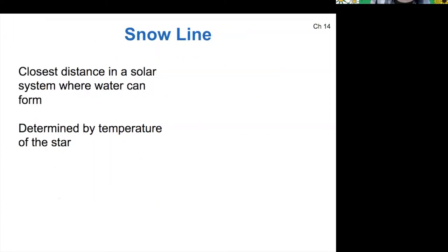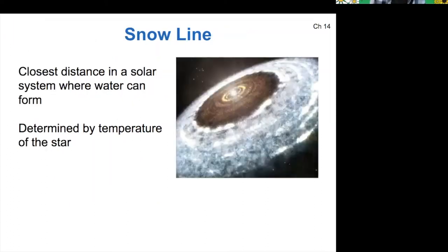Let me show you a picture just to kind of build some intuition here. If the star has some temperature, then close to the star, water will not be able to condense out to form ice. And so we're looking for the position where water can condense out into a solid form, and that's going to be at some radius away from the star, depending on its temperature.